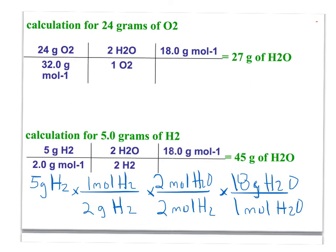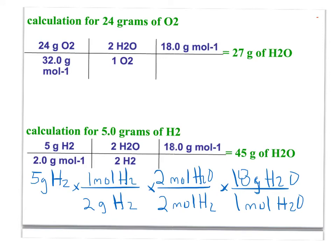Now we're going to use the same process to change grams of hydrogen to grams of water using the same three steps, after balancing the equation which we already have. We change 5 grams of hydrogen to moles using the molar mass of 2. Then we change moles of hydrogen to moles of water — there's a two-to-two ratio of hydrogen to water in the balanced equation. Now we change moles of water to grams by multiplying by 18 over 1, which gives us 45 grams of water.